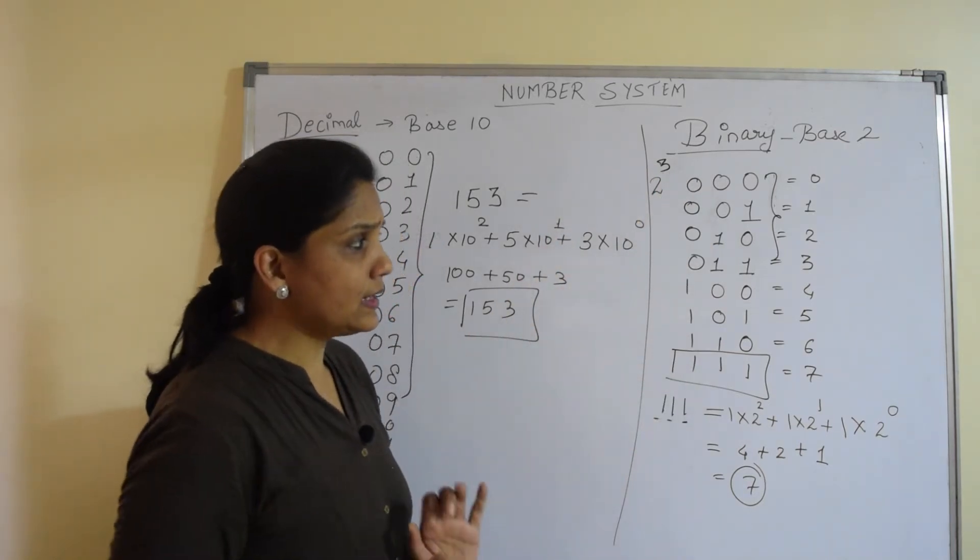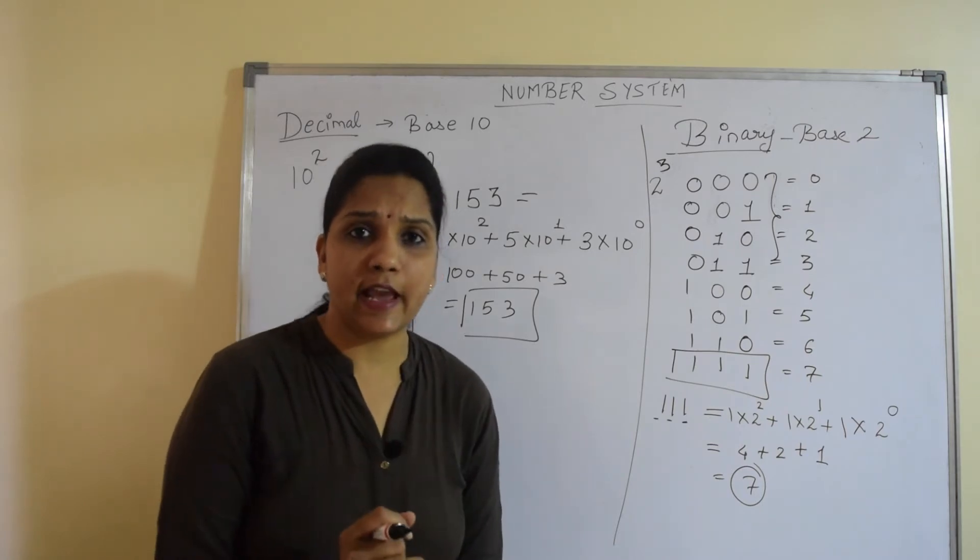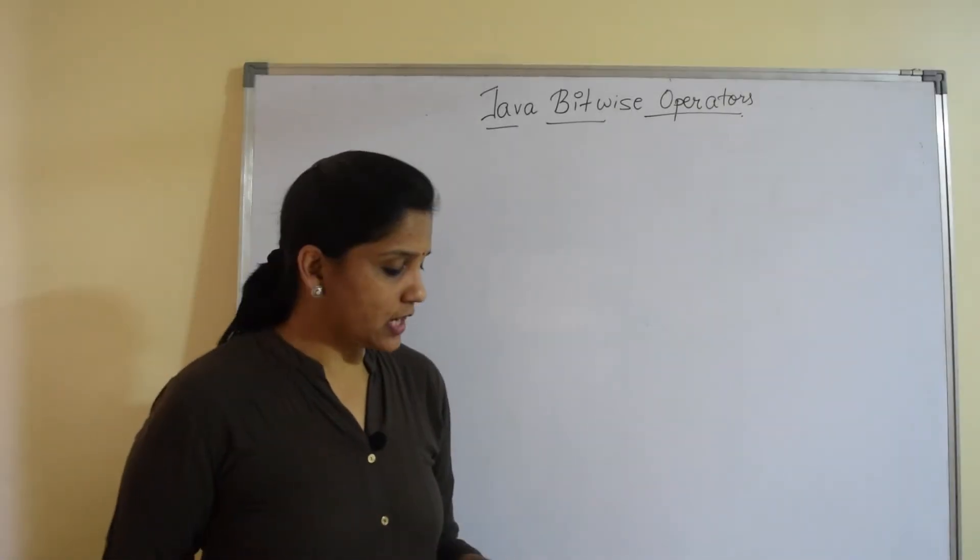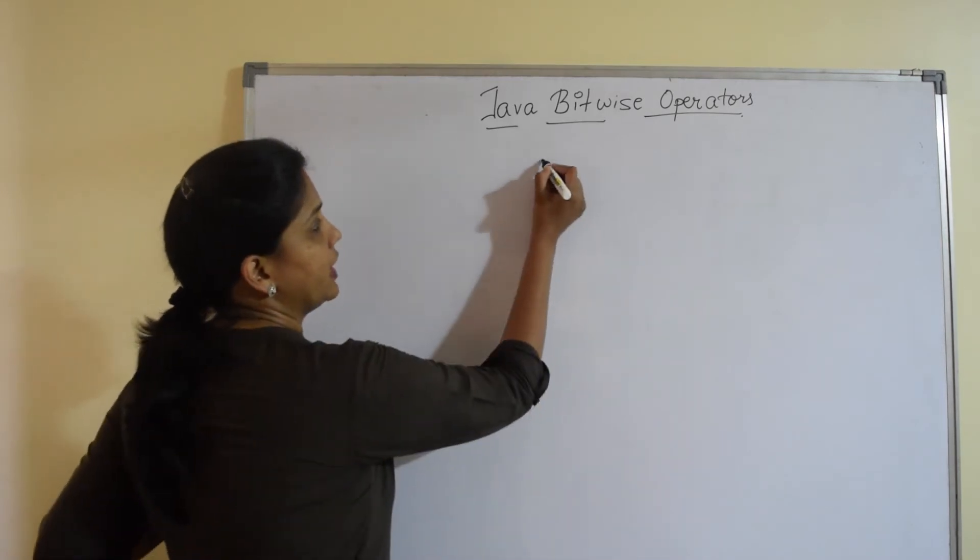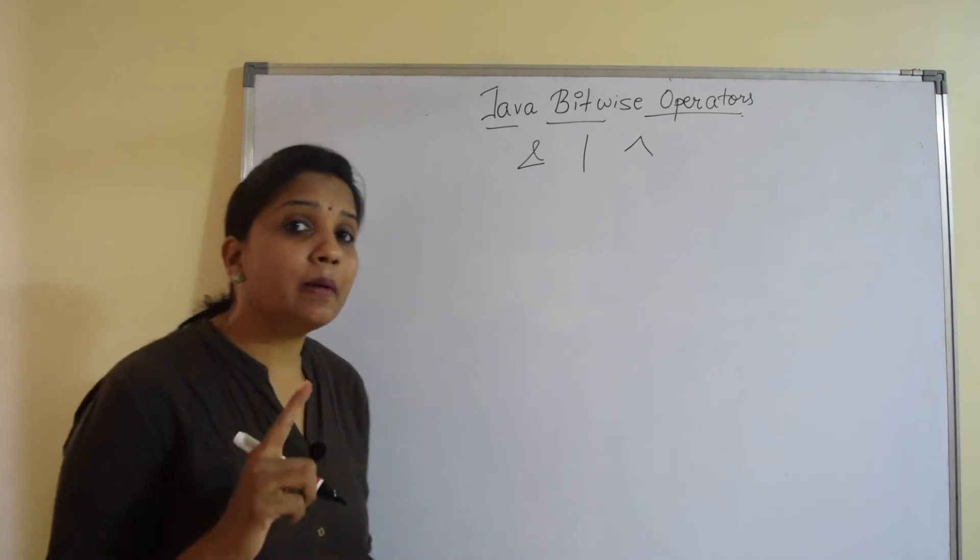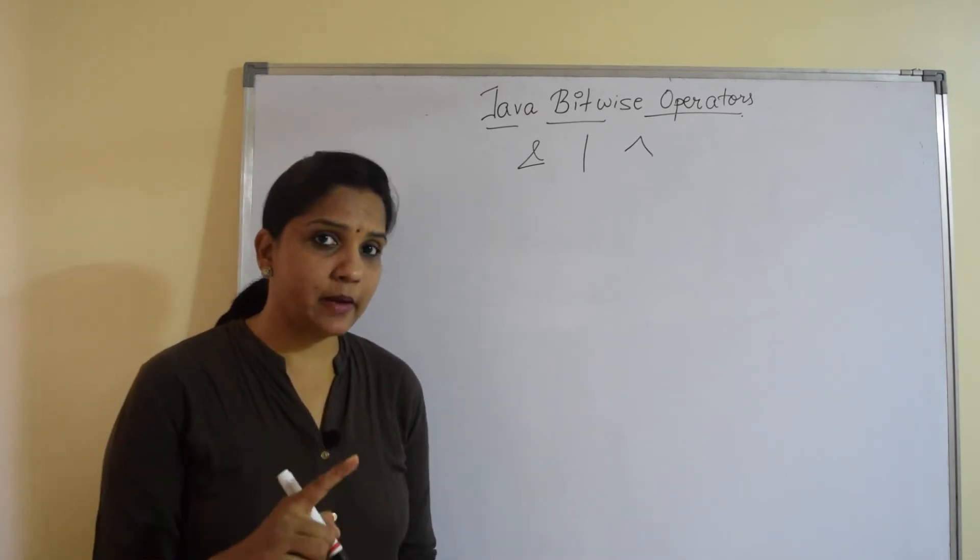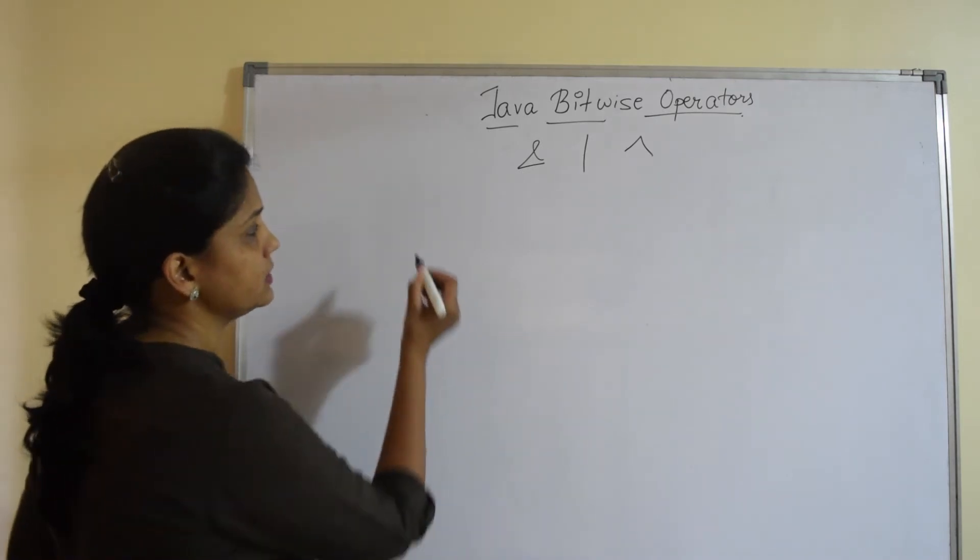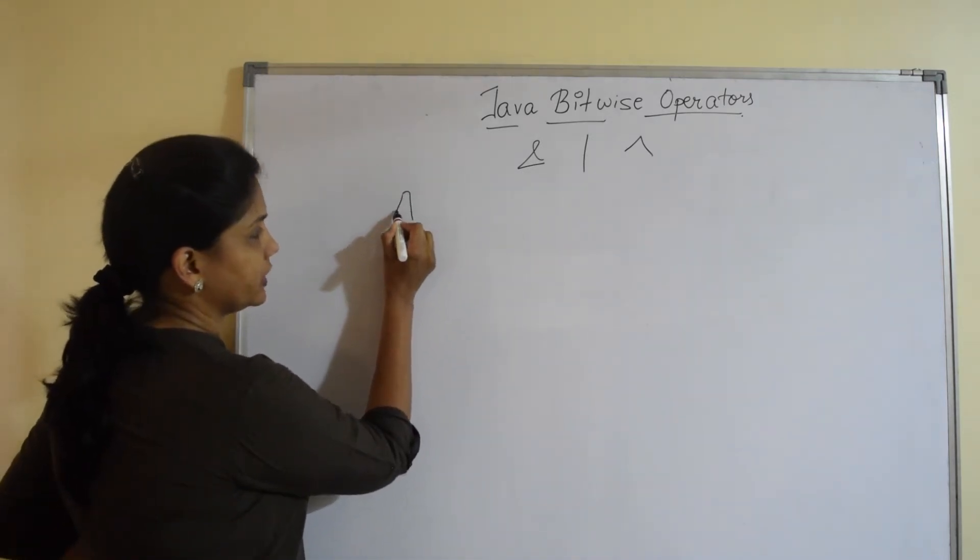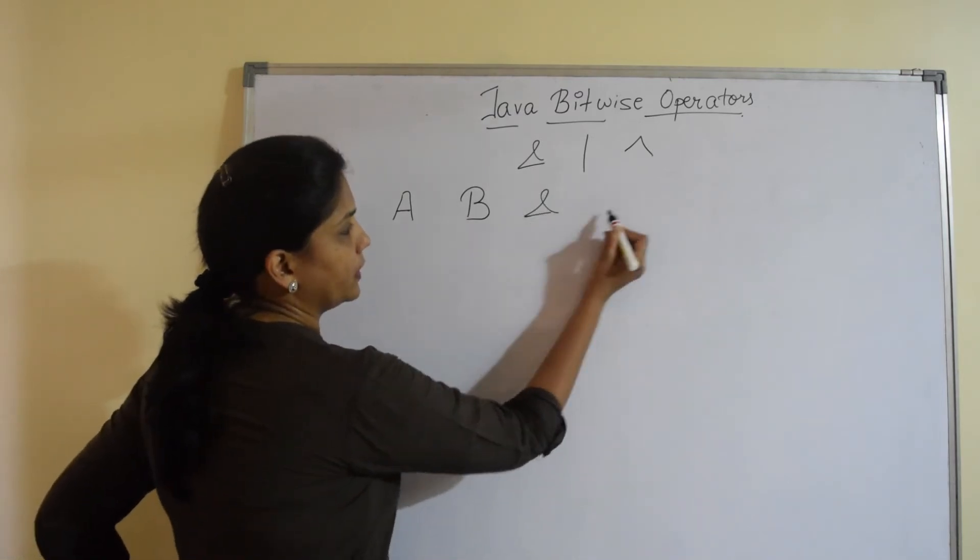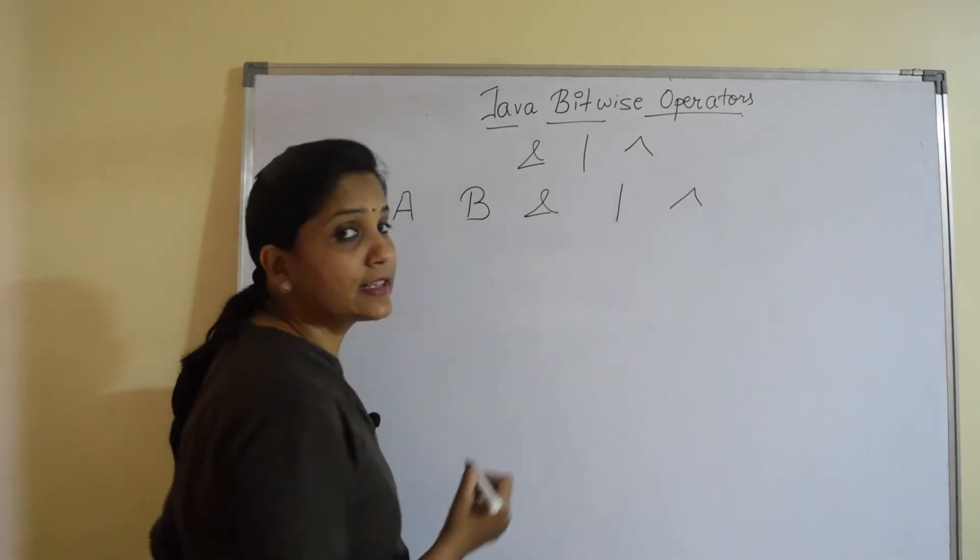So with this, let's understand how Java behaves with the bitwise operators. Now to understand Java bitwise operators, we have AND, OR and XOR. Remember the logical operators truth table, same truth table we can have for the bitwise operators. We have an expression A, we have an expression B, the AND operator, OR and the XOR.